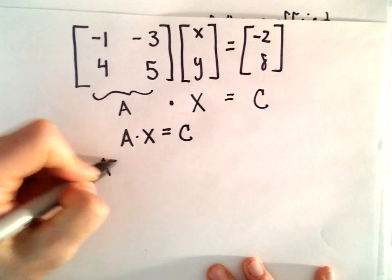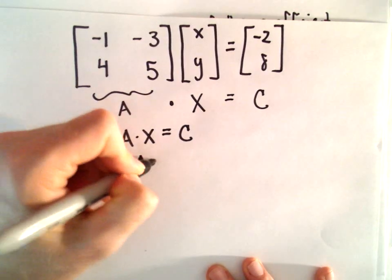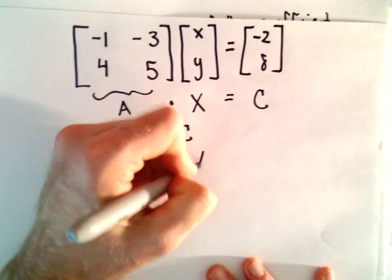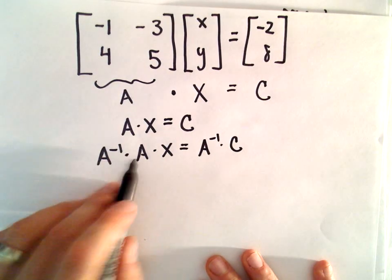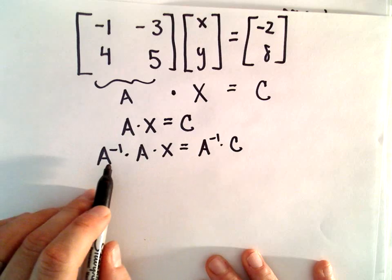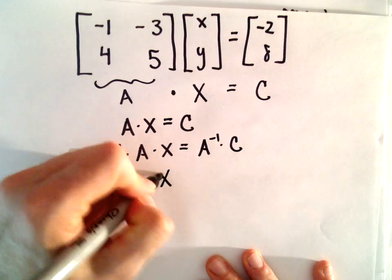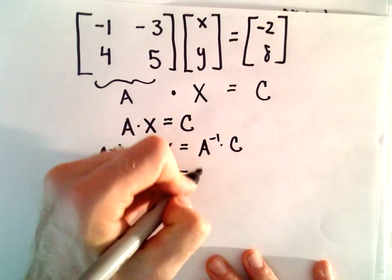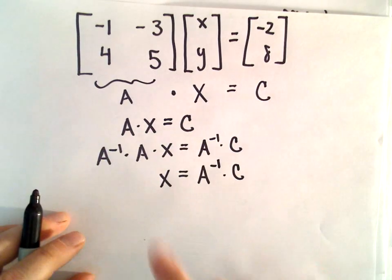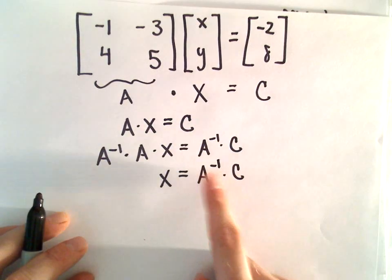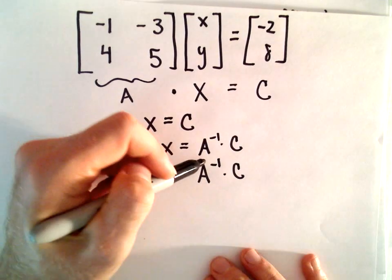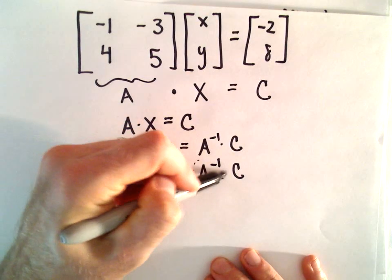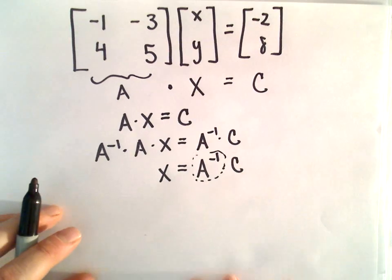If we multiply on the left by the inverse matrix, the A inverse times A will just leave us with the identity matrix, so we'll just be left with x on the left side. To get our solution, we just need to take A inverse and multiply it by C. So our whole goal is to find A inverse and then multiply it by C.